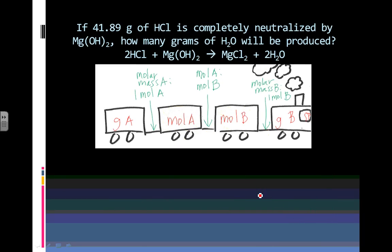Let's do one more problem. I'm going to change the color here again. If 41.89 grams of hydrochloric acid is completely neutralized by magnesium hydroxide, how many grams of water will be produced? Well, here I'm given this. So that's going to be A, what I'm given. And I'm being asked for grams of water. So that's going to be B as well.